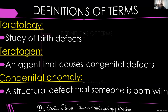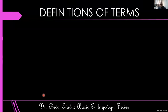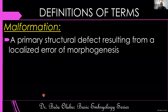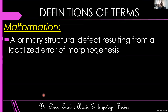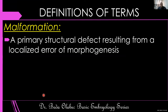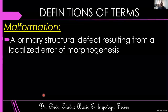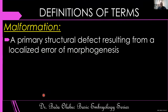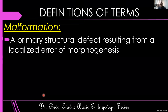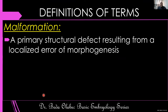Maybe I should define more terms, although we use them interchangeably. In its strict definition, a malformation is a primary structural defect resulting from a localized error of development — a localized error of anatomical development, that is morphogenesis. So an organ can be described as being malformed, meaning it did not form appropriately.